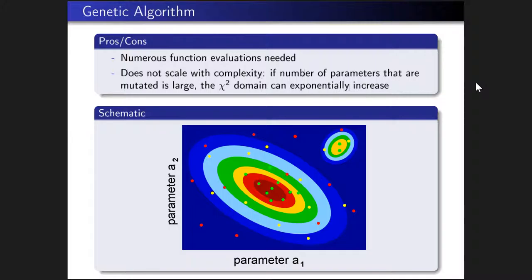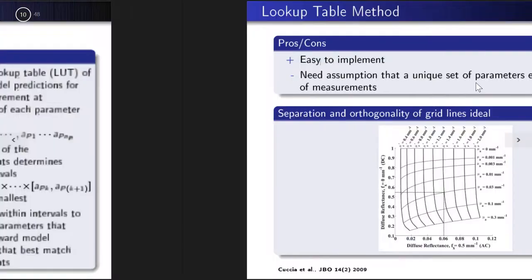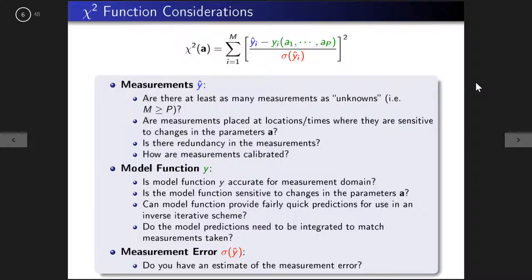A question arose: looking at the chi-squared equation, if the difference between measurement and model is small but the standard deviation is high for all measurements, doesn't that favor high standard deviations? The answer: if the standard deviation is large for a particular measurement, that difference is weighted smaller in the overall sum. It's a way of relatively weighting contributions from all measurements, placing them on more equal ground.